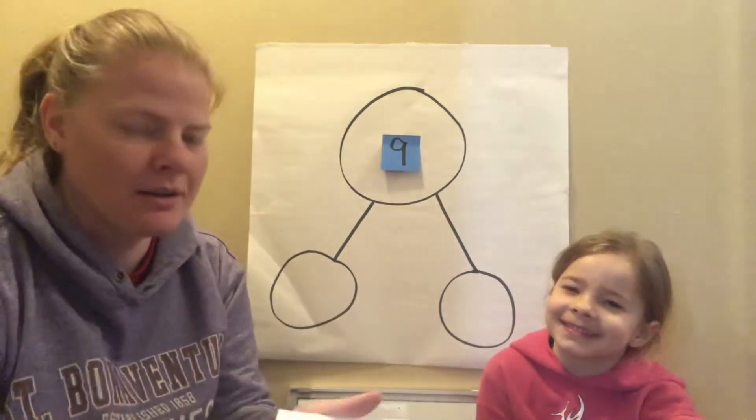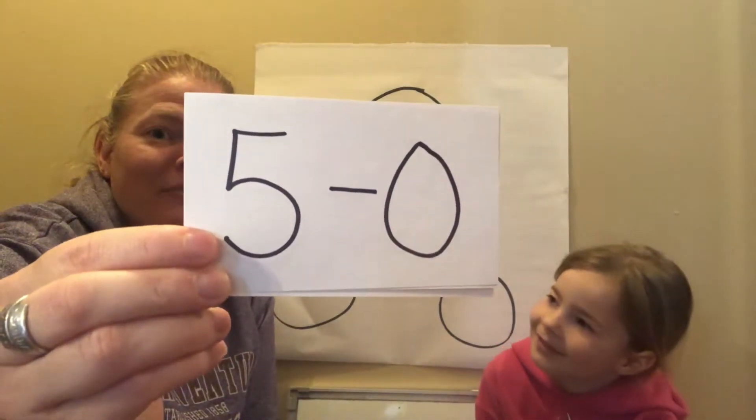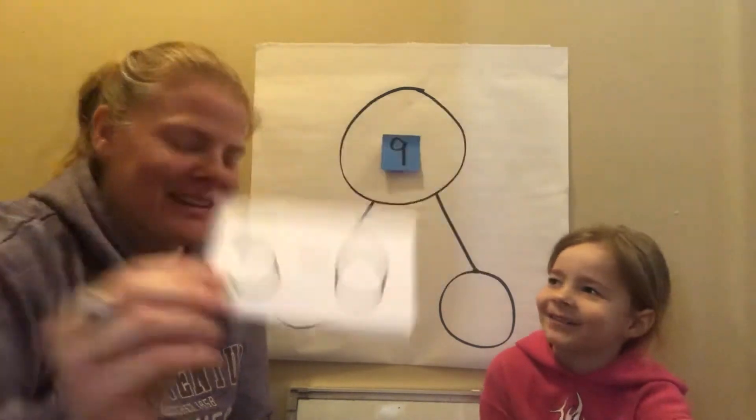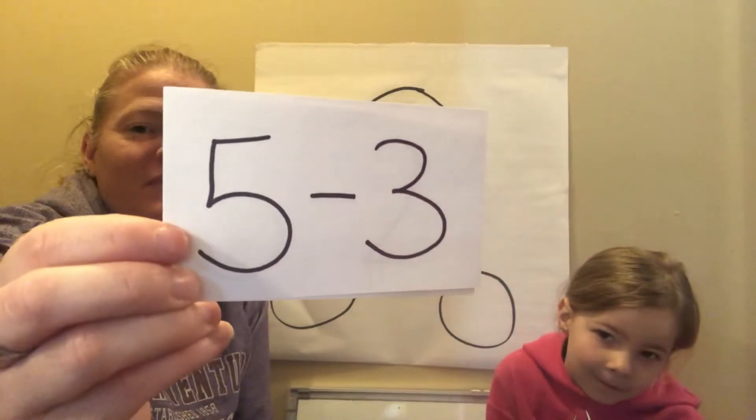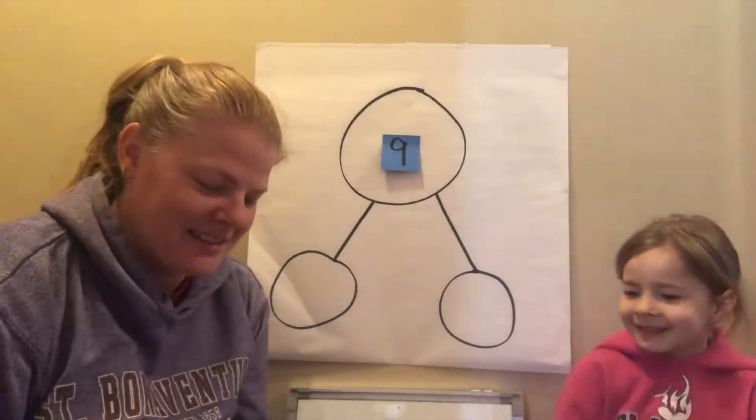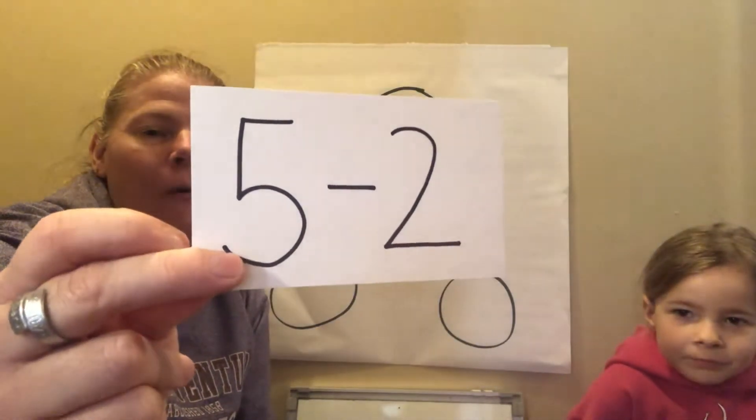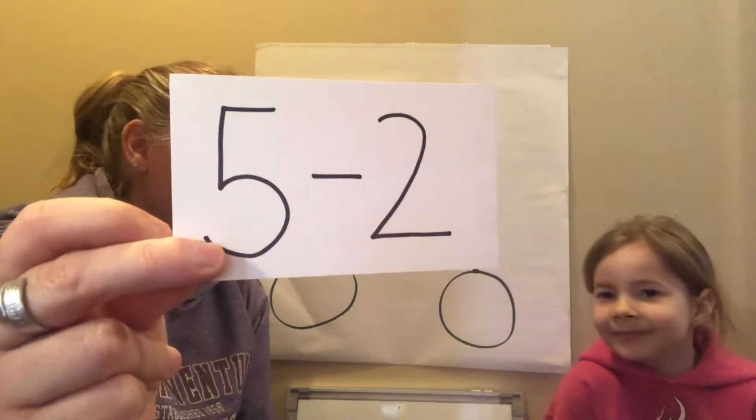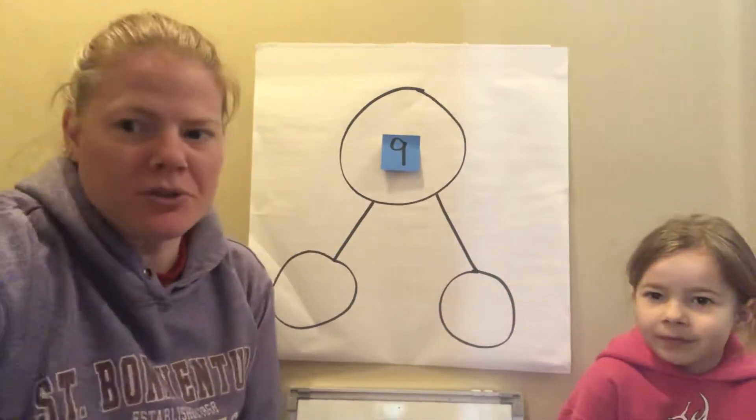Five minus zero is? Five. Five minus three? Two. And five minus two? Three. Very good. She should know though, she's in first grade.